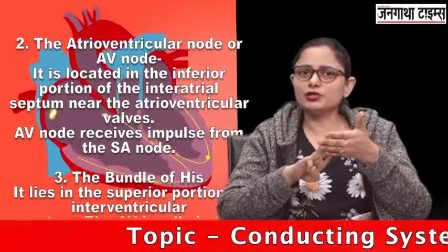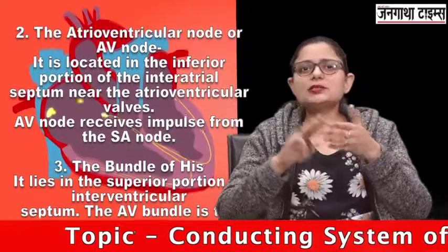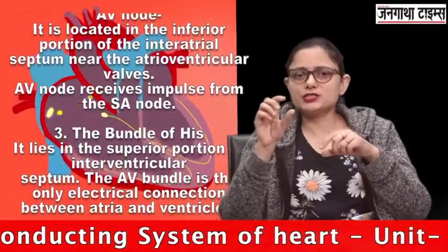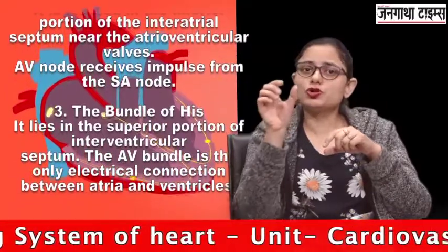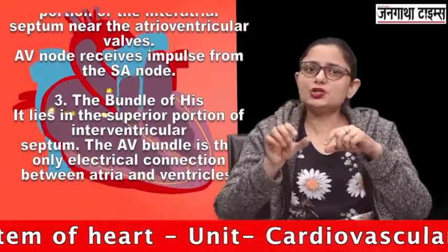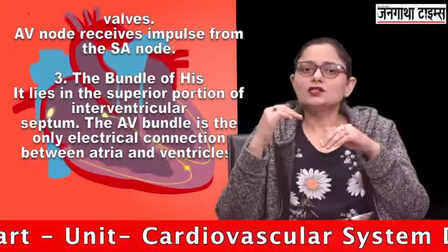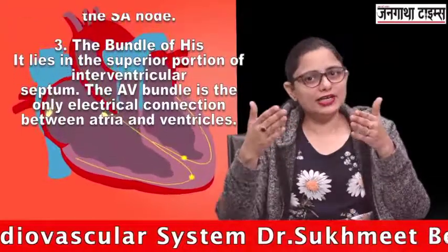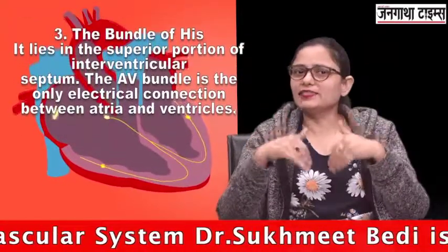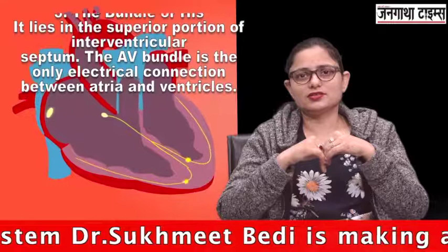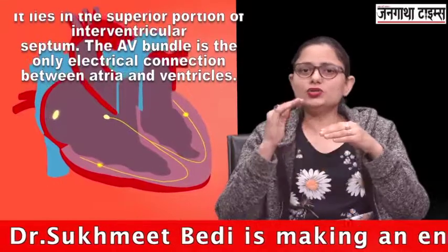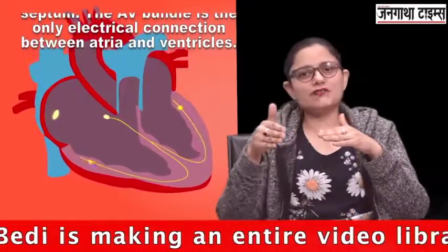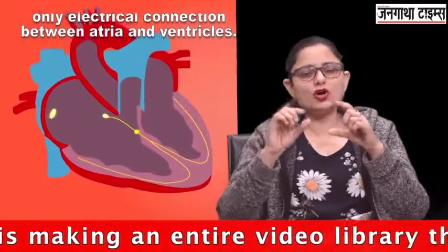The third component is the Bundle of His. It is present in the superior portion of the interventricular septum. This is the only electrical connection between the atria and the ventricles. The impulse from the AV node travels to this Bundle of His.